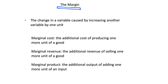When we think about the margin, we're thinking of the change in a variable which is caused by increasing or decreasing another variable by one unit. It is how one variable changes when we change another variable by a small increment or by a marginal amount, and that's where the term margin comes from — a marginal change is a very small change.